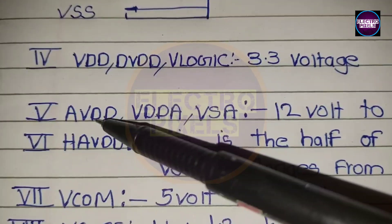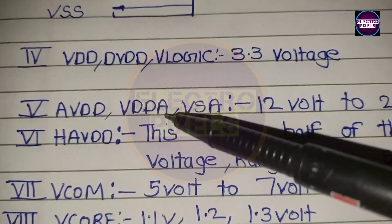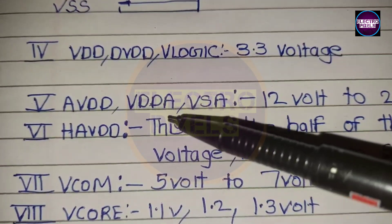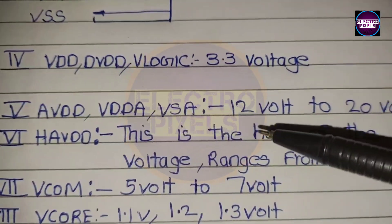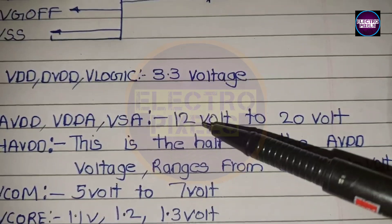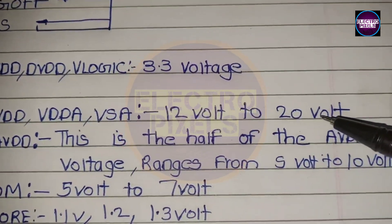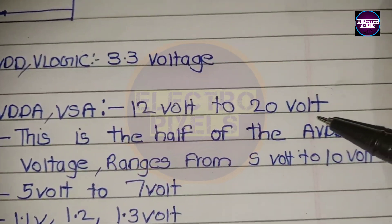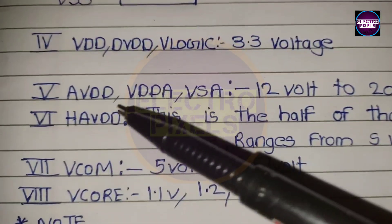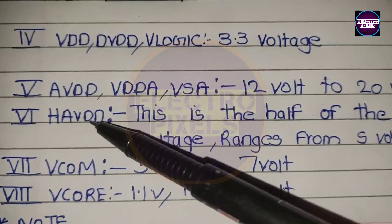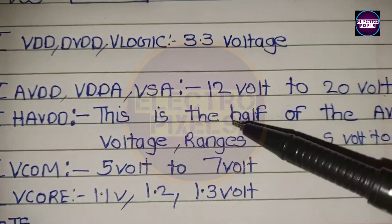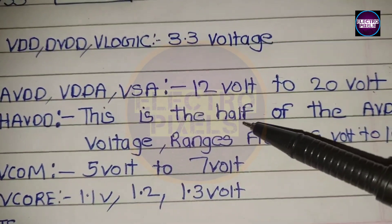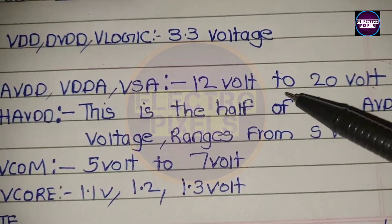The fifth one is the AVDD voltage, also called as VDD, AVSA, etc. Its value ranges from 12V to 20V. Next is the HAVDD voltage. Its value depends on the AVDD voltage because its value is the half of the AVDD voltage — mostly its value ranges from 5V to 10V.